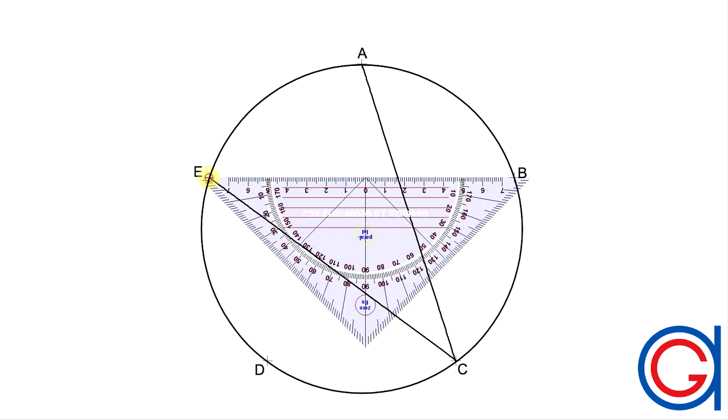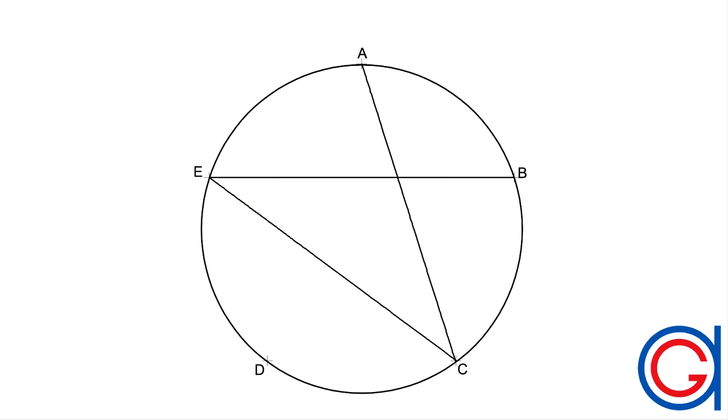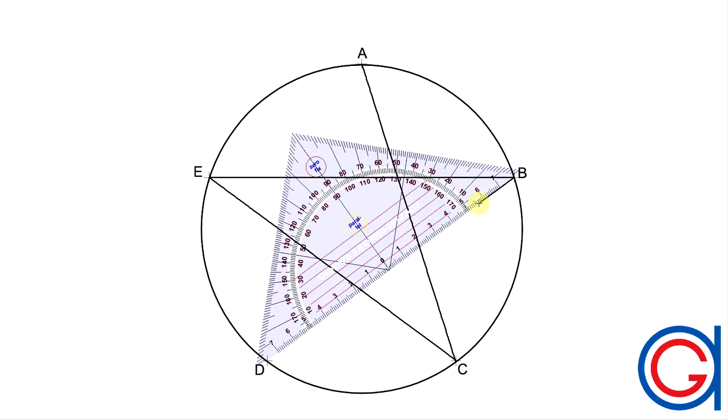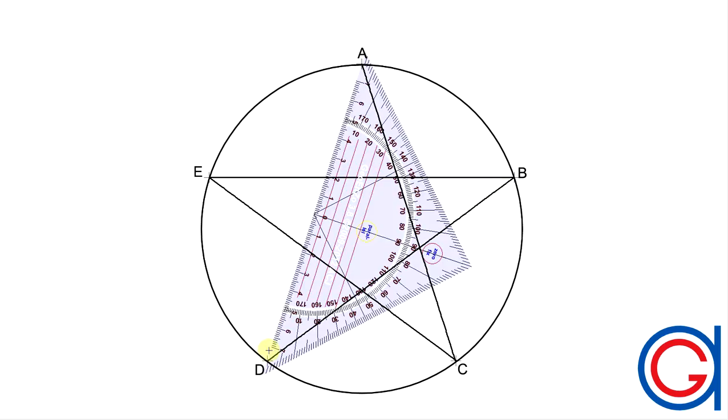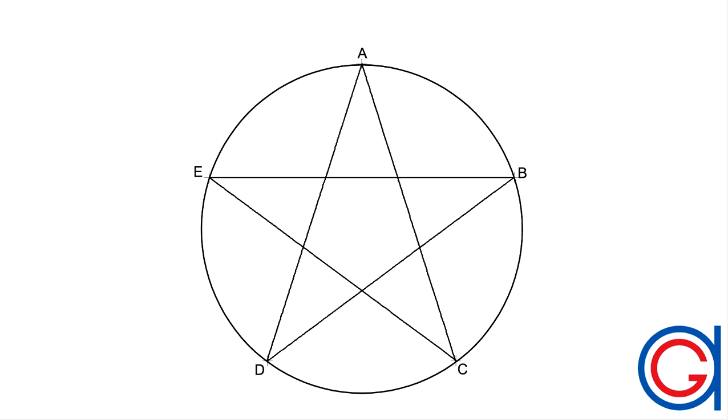Now we will join vertex C to vertex E, skipping vertex D. So now we have completed our order two star pentagon, which is the simplest regular star polygon.